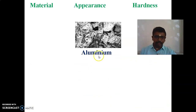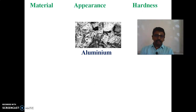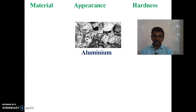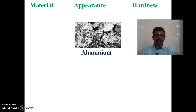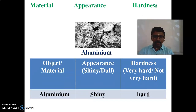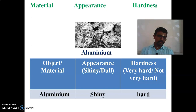The next material is aluminium — symbol Al. Its appearance is shiny, so it has the lustrous property. And for hardness, it is very hard. So we can conclude: aluminium's appearance is shiny (lustrous), and its hardness is hard.